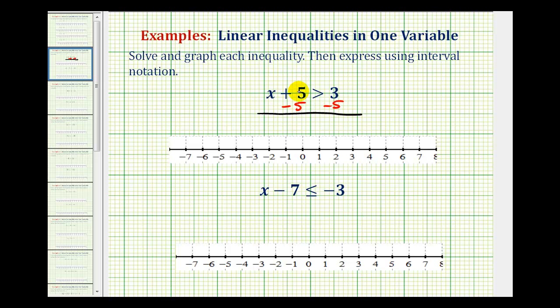Notice when we do this, plus 5 minus 5 is 0. That's why we did that, and now we're left with x is greater than 3 minus 5 is equal to negative 2. So our solution is x is greater than negative 2, and now we want to graph this interval.